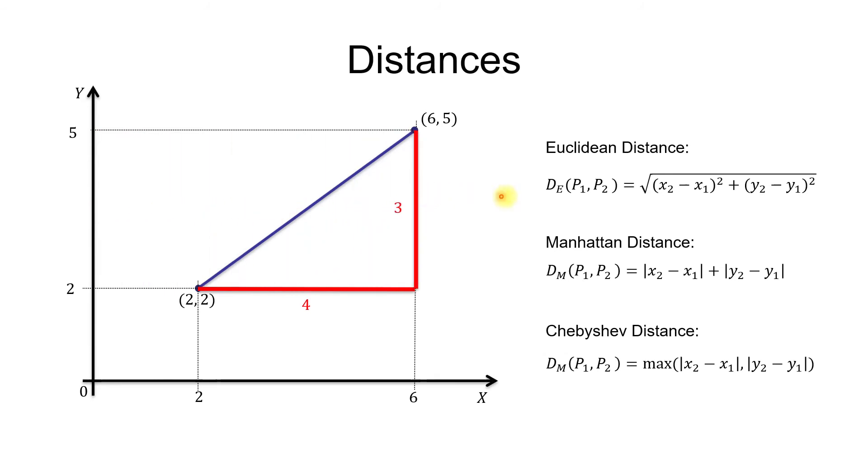Now we can apply the formula for Euclidean distance, and substituting our values to this formula, we get something like this: 6 minus 2 squared plus 5 minus 2 squared, square root. It gives a square root of 4 squared plus 3 squared. It's a square root of 16 plus 9, square root of 25. It is 5. So Euclidean distance is 5.